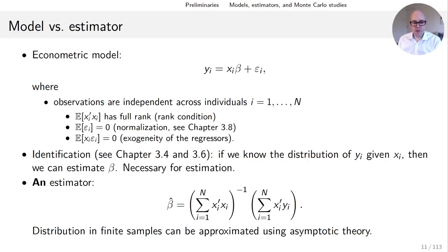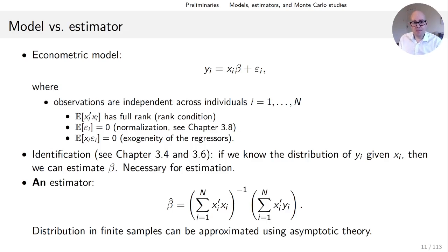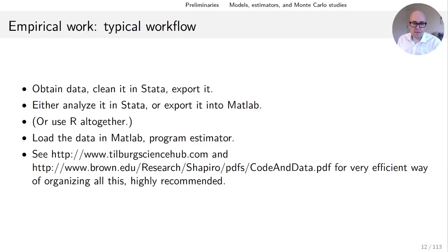This estimator has a distribution in finite samples, which can be approximated using asymptotic theory — the thought experiment of letting the number of observations go to infinity. From that, we figure out what the variance-covariance matrix of beta-hat looks like, which is used to get standard errors, confidence intervals, and tests. That's the distinction between a model and an estimator.